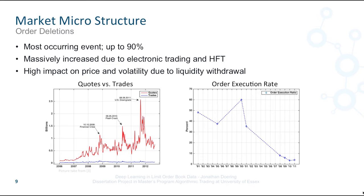It is worth noting that this behavior spikes at extreme events. In the figure, the financial crisis in 2008, the flash crash in 2010 and the US downgrade in 2012 are marked. Additionally, the chart on the right side shows a wider picture presenting the order execution rate over a period from 1991 until 2011 taken from a variety of markets. Again, the trend seems to be clear.